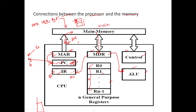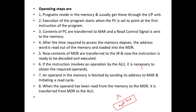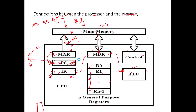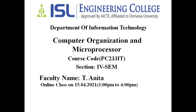The Memory Address Register holds the address, the Memory Data Register holds the data, and the Control Unit sends control signals. The ALU performs any arithmetic and logical operations. To recap the full flow: PC contents are transferred to the address register; the memory is searched at that address; the data found is sent to the data register; and then transferred to the instruction register as the currently executing instruction.